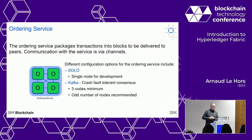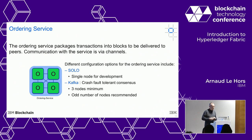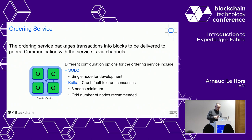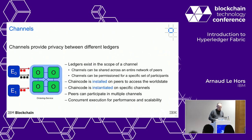Consensus algorithms are a field of active research, so we wanted to ensure we were open to different algorithms and could adapt as new ones become available. By default there's a Solo ordering service — a single node, not for production, just for development. For production we have an ordering service based on Kafka, which is crash fault tolerant. We don't yet have Byzantine fault tolerance today, but I'll talk about what's in development.